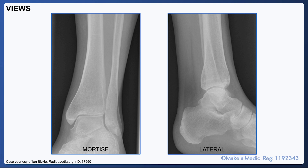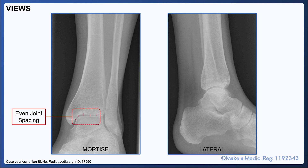There are two main views with ankle X-rays: the mortise view and the lateral view. On the mortise view, you can see the tibia on the left and the fibula on the right. These bones articulate with the talus, and the ends of the tibia and fibula that wrap around the talus are the medial and lateral malleoli. Initially, when looking at a mortise view, you should check that the joint space is even between the talus and the tibia.